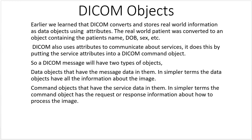DICOM also uses attributes to communicate about services. It does this by putting the service attributes into a DICOM command object. So a DICOM message will have two types of objects: data objects, which have the message data — all the information about the actual image being transmitted — and command objects, which have the service data, meaning the request or response information about how to process the image.